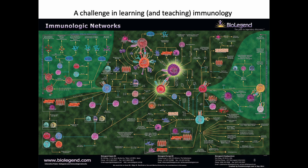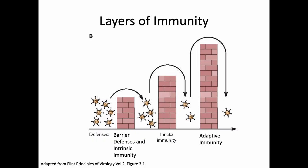The immune system is a big integrated system, and to make sense of it, we like to divide it into some categories. Those categories are a little bit artificial — things we as scientists made up. The immune system doesn't know 'today I am in this category, tomorrow I am in this category.' There are places where the boundaries are wishy-washy. But we do have these general categories, and we can divide the immune system into three general layers.